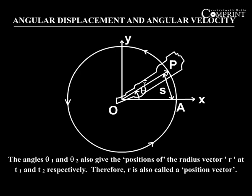The angles theta1 and theta2 also give the positions of the radius vector r at t1 and t2 respectively. Therefore, r is called a position vector.